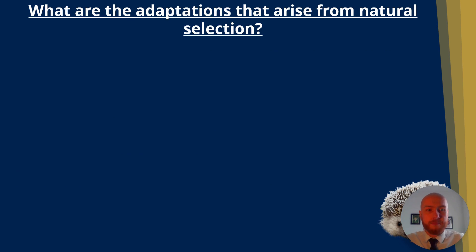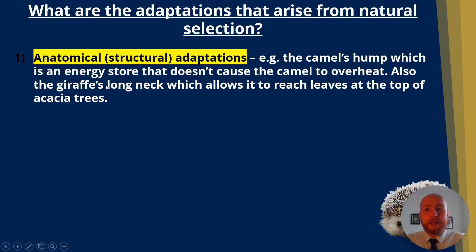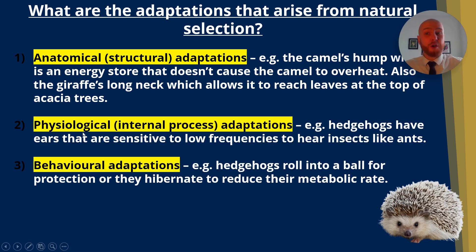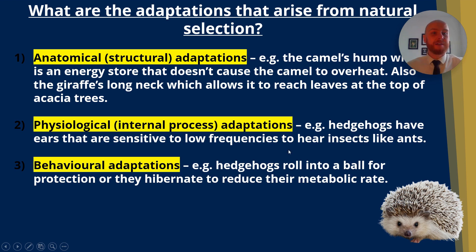What are the adaptations that arise from natural selection? They can be anatomical — for example a camel's hump, which is an energy store packed with fat, or a giraffe's neck which allows it to reach leaves at the top of trees. Or they could be physiological, such as a hedgehog having ears sensitive to low frequencies so it can hear insects like ants.